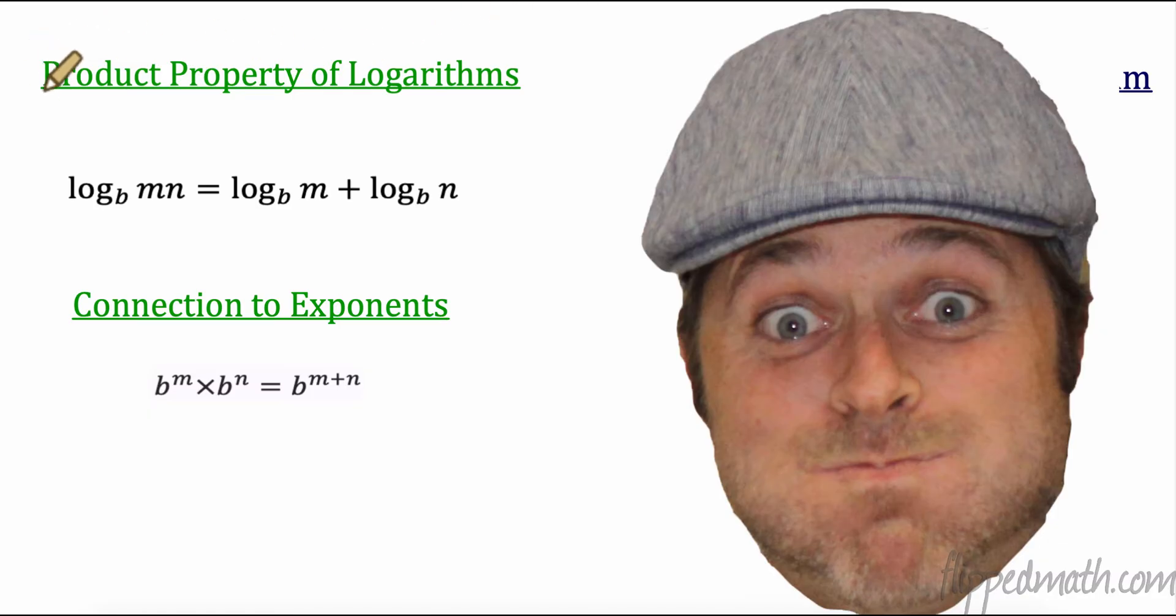So we do have a connection between logarithms with multiplication and adding. And it is our product property of logarithms. This is one of those things that you're going to need to learn. When I have a log and what I'm taking the log of is being multiplied, I can split that. I can expand that logarithm to two things - log base b of m plus log base b of n. And the reason is, remember, there's a connection between exponents and logarithms. When I have the same base and I'm multiplying, I add the exponents.